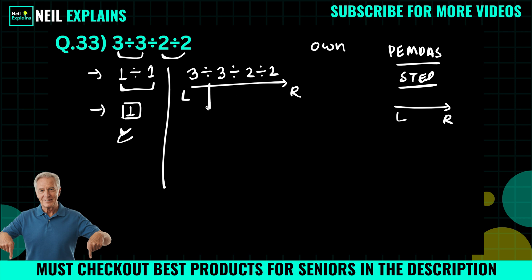Okay, so at most left we have this operation: 3 divided by 3, which equals to what? 1. So we can simply write 1 on the place of this: 1 divided by 2 divided by 2.